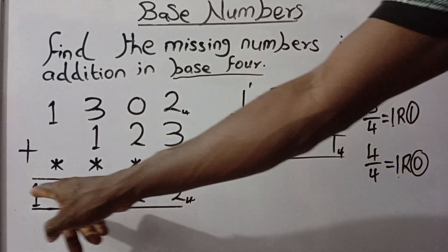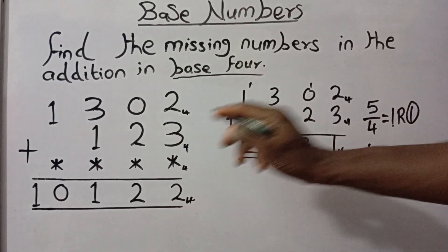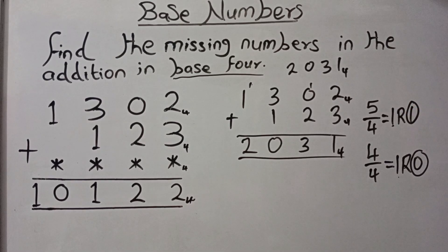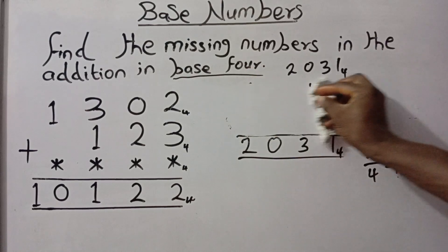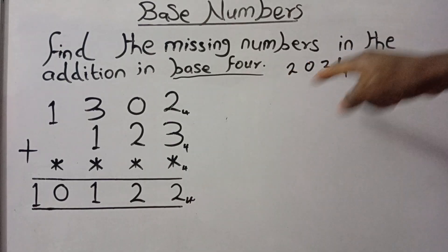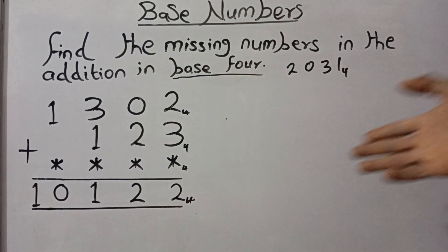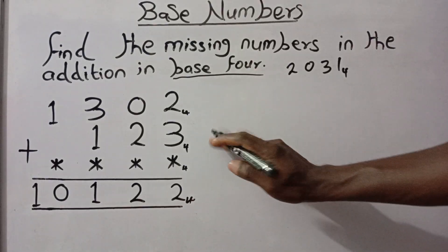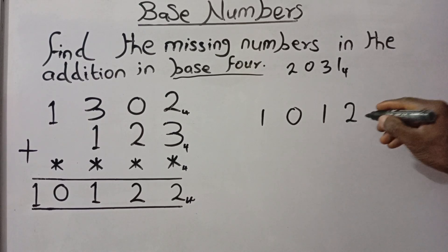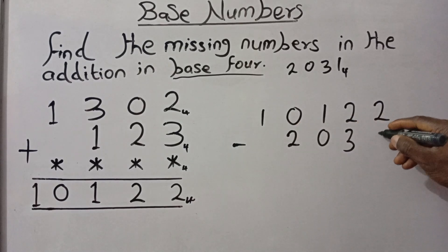What we are going to do next is subtract what we have here from the overall solution. The result of 1302 plus 123 in base 4 is 2031 base 4. So now we are going to subtract: 10122 minus 2031, both in base 4. This subtraction will be done in base 4 — remember the operation is done in base 4.